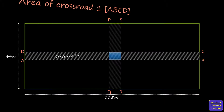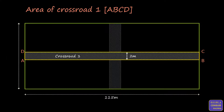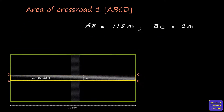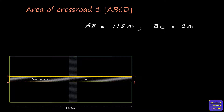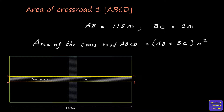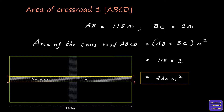Area of crossroad 1 — rectangle ABCD: AB is equal to 115 meters and BC is equal to 2 meters. Therefore, area of ABCD equals length into breadth, that is AB into BC, which equals 115 into 2. On multiplying, we get 230 square meters. Therefore, area of crossroad ABCD is equal to 230 m².